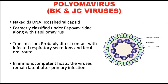Moving on to polyomaviruses — we will focus on what is commonly isolated from human samples: the BK and JC viruses. They are naked, double-stranded DNA viruses, easily transmitted through direct contact. Immunocompetent hosts can retain the viruses in their systems, even when immune-competent, remaining asymptomatic.